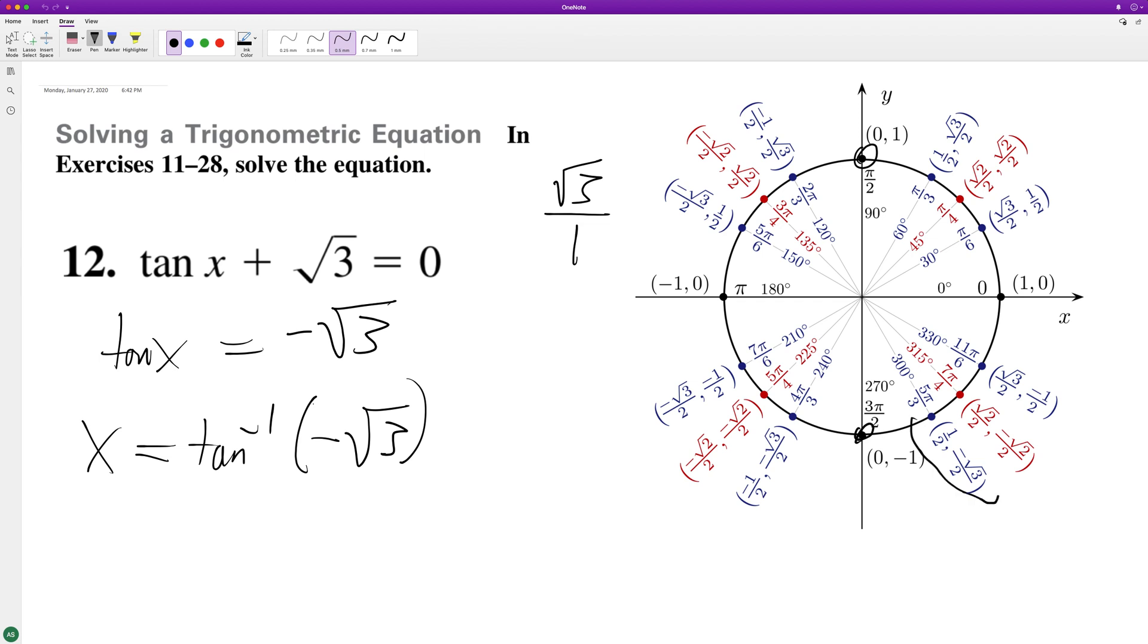That's 5π over 3, or in this case it's going to be equal to negative π over 3, because we're valid from negative π over 2 to π over 2.